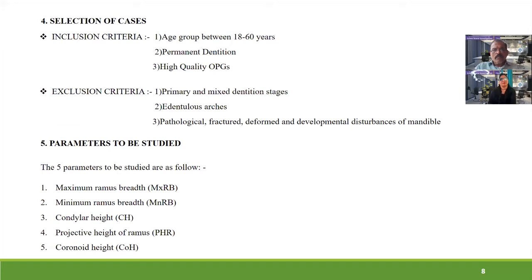Exclusion criteria included primary and mixed dentition stages, edentulous arches, and pathological fracture, deformed, and developmental disturbances of the mandible. Five parameters were studied: maximum ramus breadth, minimum ramus breadth, condylar height, projective height of ramus, and coronoid height.